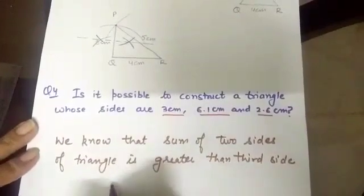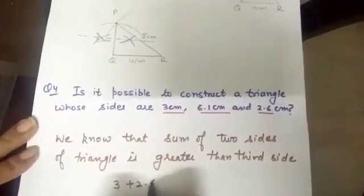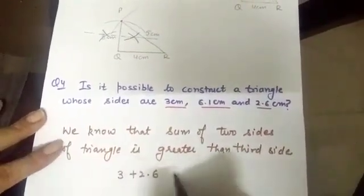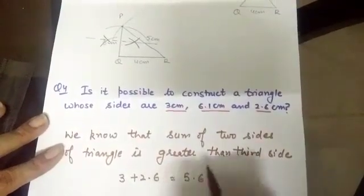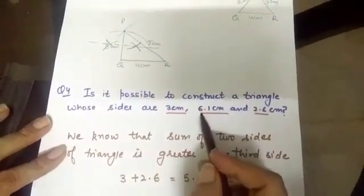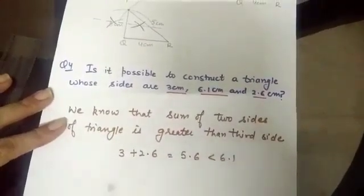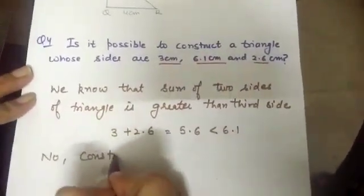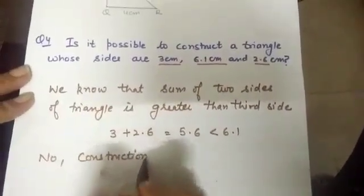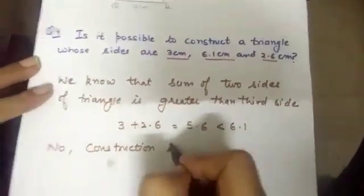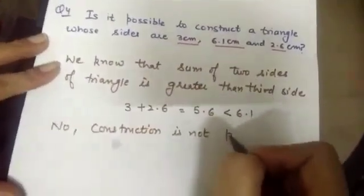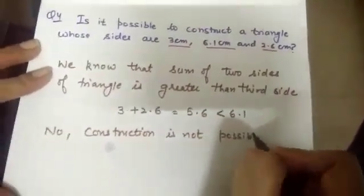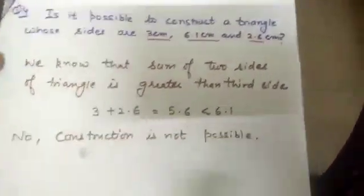Now, which two sides you have to take? Among three, the shorter one. 3 plus 2.6. The sum is 5.6. Is it greater than the third side which is given to a 6.1? No, it is less than 6.1. So, no, construction is not possible. The sum of two sides is always greater than the third side. We will say construction is not possible.